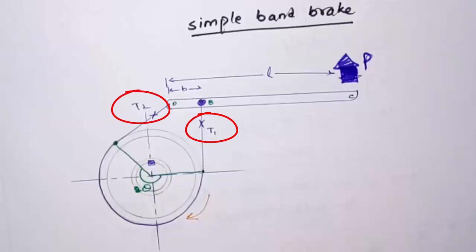This is the contact angle of band and wheel denoted by theta. T1 and T2 are the tensions in the band. As the pulley is rotating clockwise, so this side is tight side and this is slack side. It means T1 is greater than T2. Always T1 is for tight side and T2 is for loose side tension.